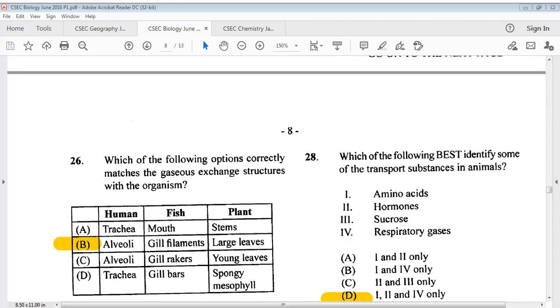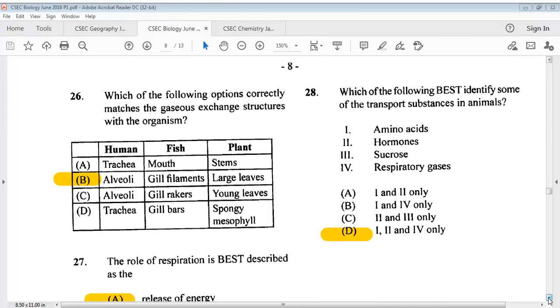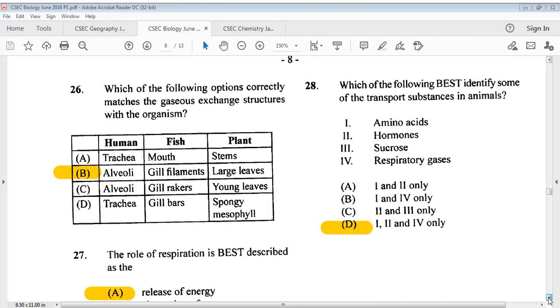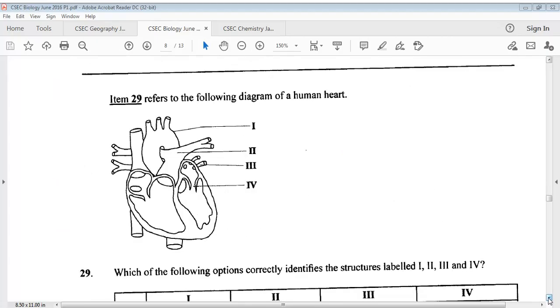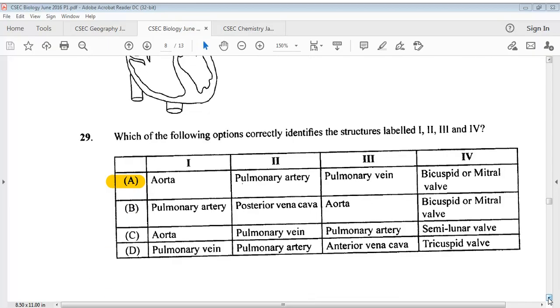For question 28, it says which of the following best identifies some of the transport substances in animals? 1, amino acids, 2, hormones, 3, sucrose, 4, respiratory gases. Our answer is 1, 2, and 4 only. For question 29, here we have a diagram of the human heart. It says which of the following options identifies the structures labeled 1, 2, 3, and 4? Our correct answer is A.